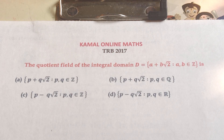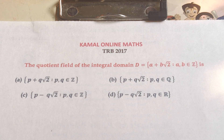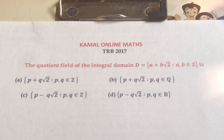Welcome to Komal Online Max. The quotient field of the integral domain D equals A plus B root 2, such that A and B are elements of the set of integers ℤ. So A plus B root 2, where A and B are integers — we need to find the quotient field of this integral domain.